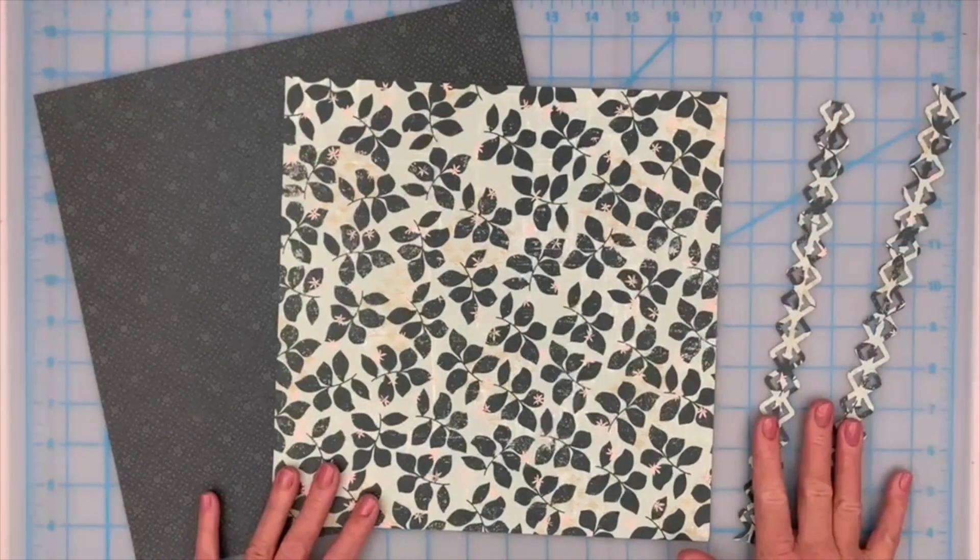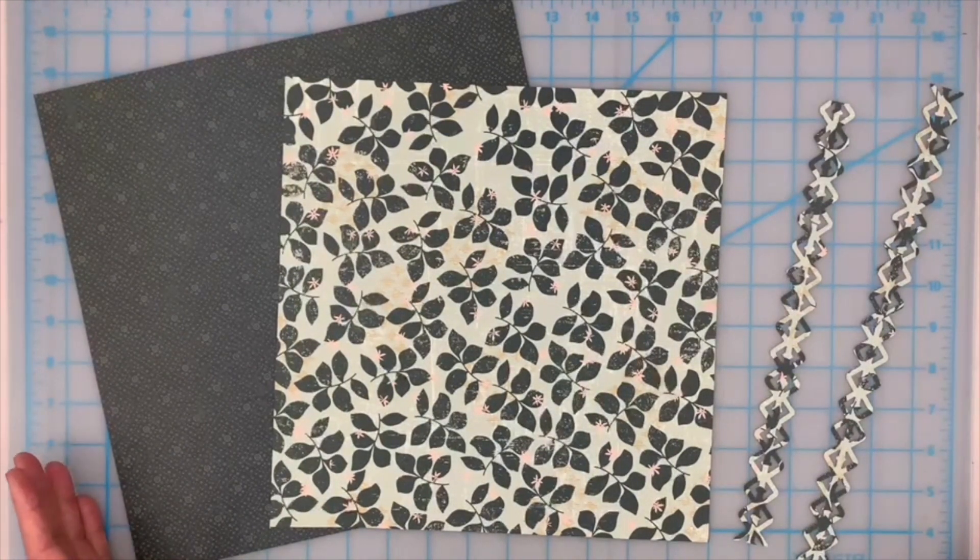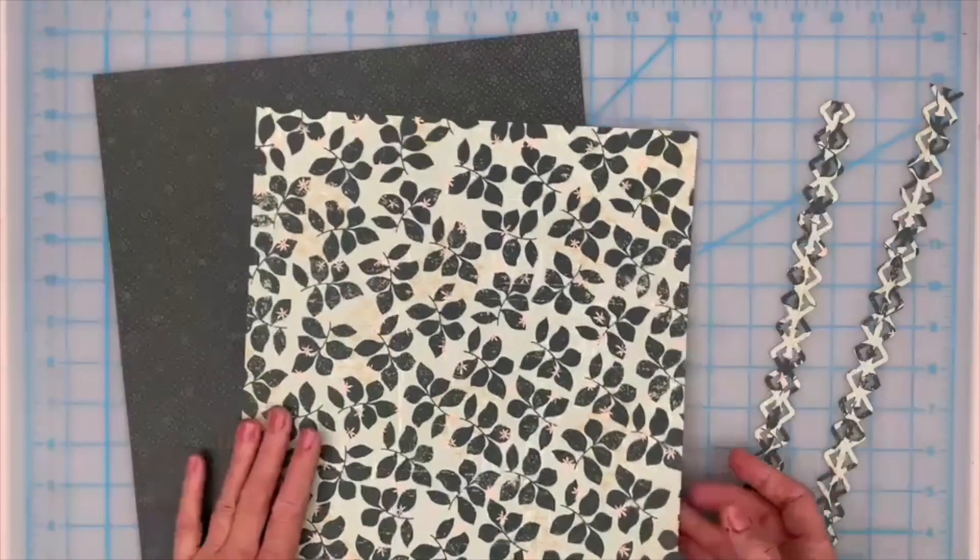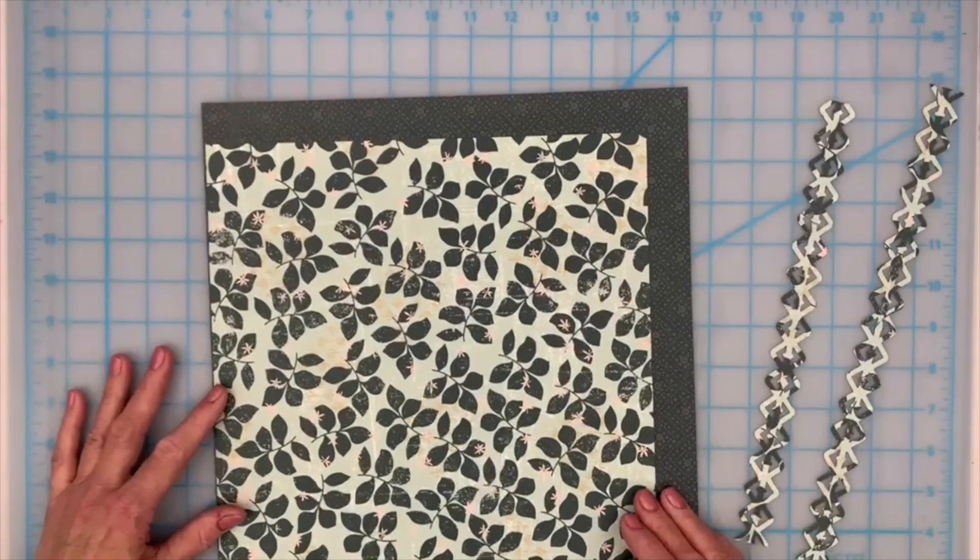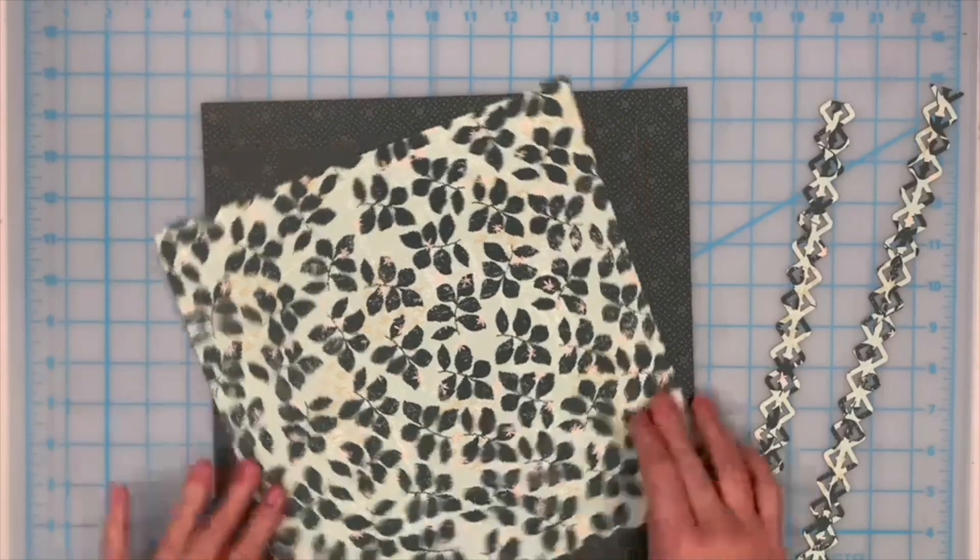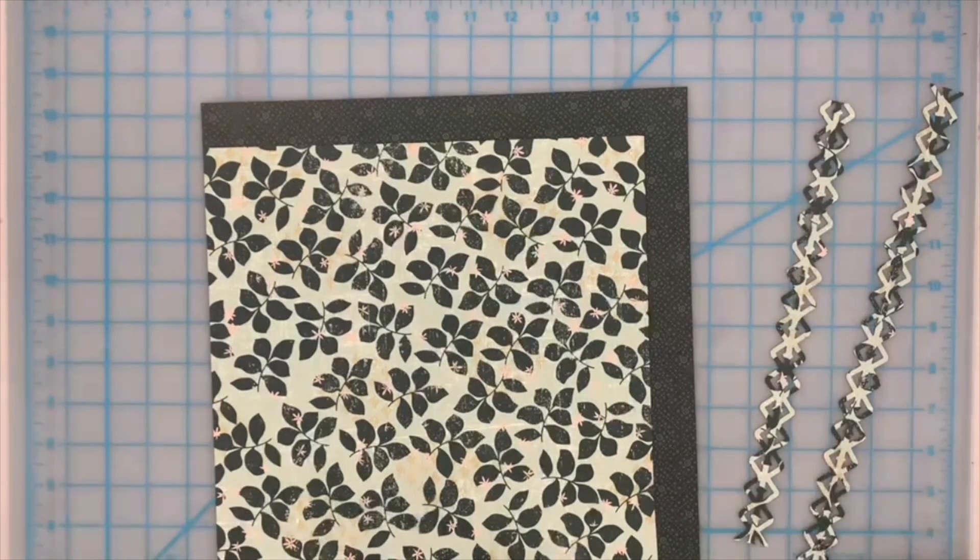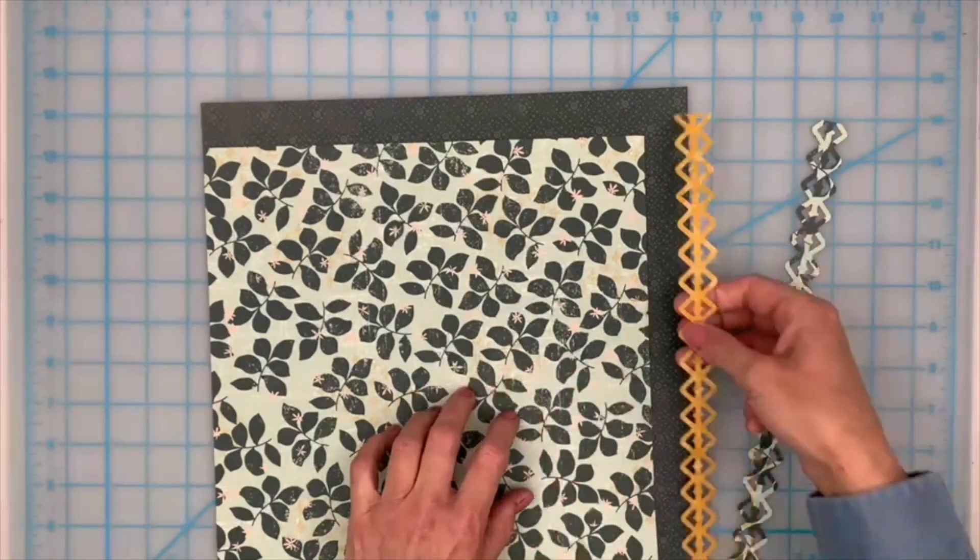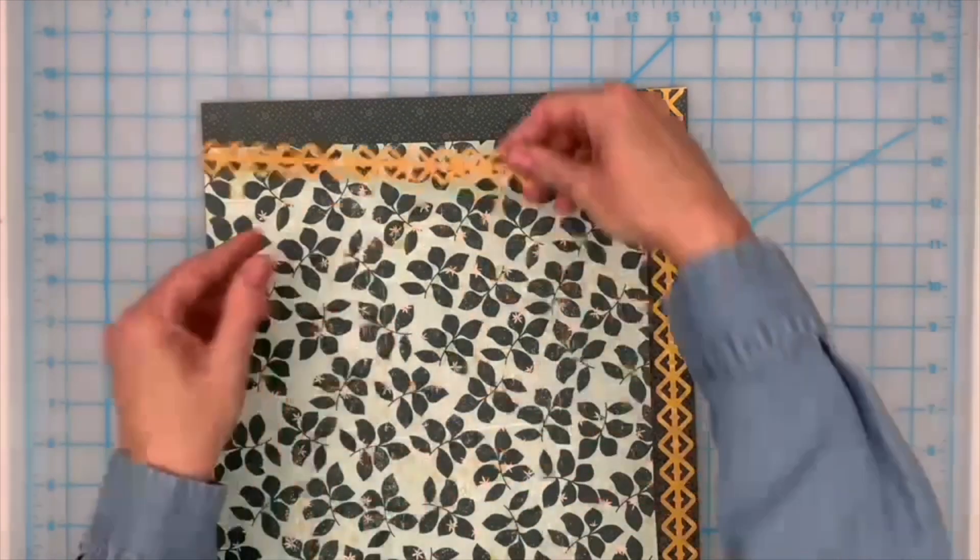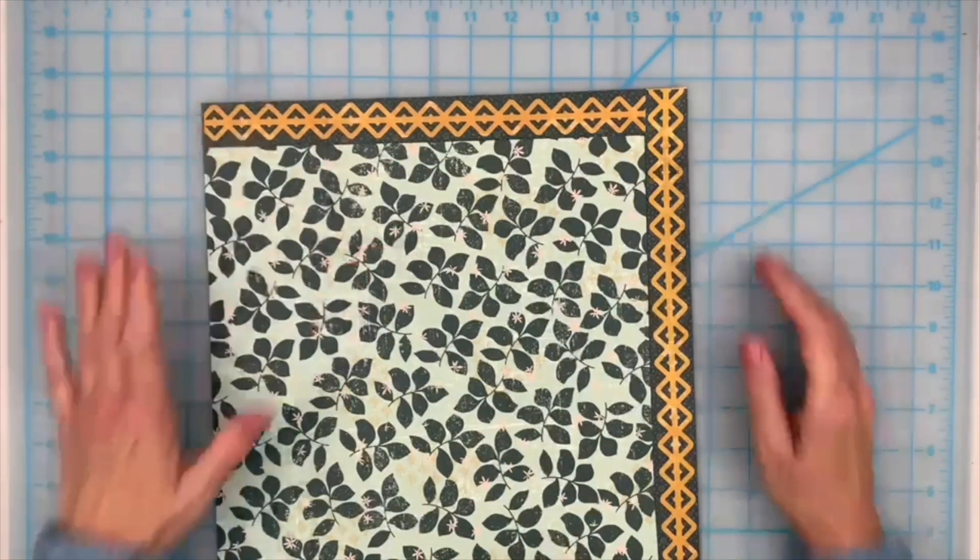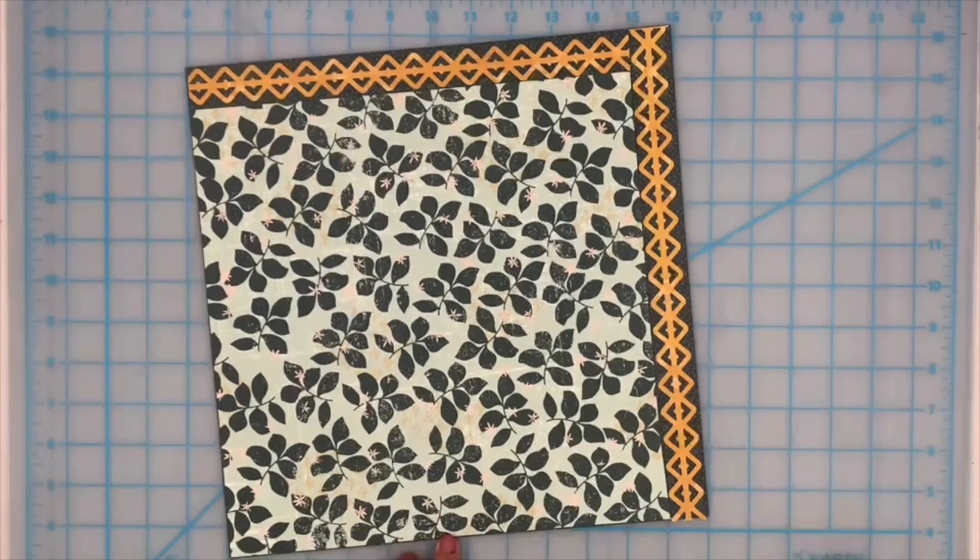After punching our two lengths of border strips, we have everything we need for this particular layout. We're going to take this large square which is not quite 11 inches square and nestle it down in the corner. We're going to flip our border strips over and place one along that side and one along this side, and that's basically our layout base completed.